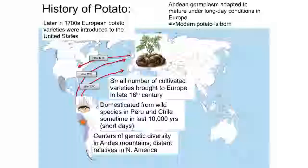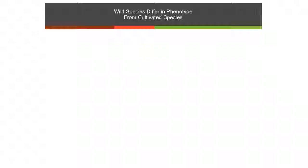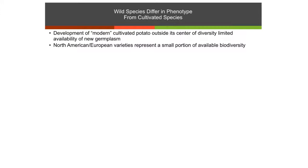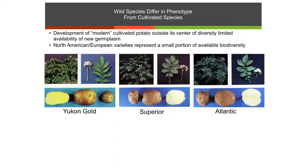If we look at wild species and compare them to modern species, you'll see that they're actually quite different. The selection of the modern potato we're eating today is actually very restricted in terms of overall diversity. If we look at current cultivars — here's three: Yukon Gold, Meyer, the yellow potato — and if we look at Atlantic and Superior, two major cultivars where Atlantic is used to make potato chips, you'll see they actually look pretty similar to each other.